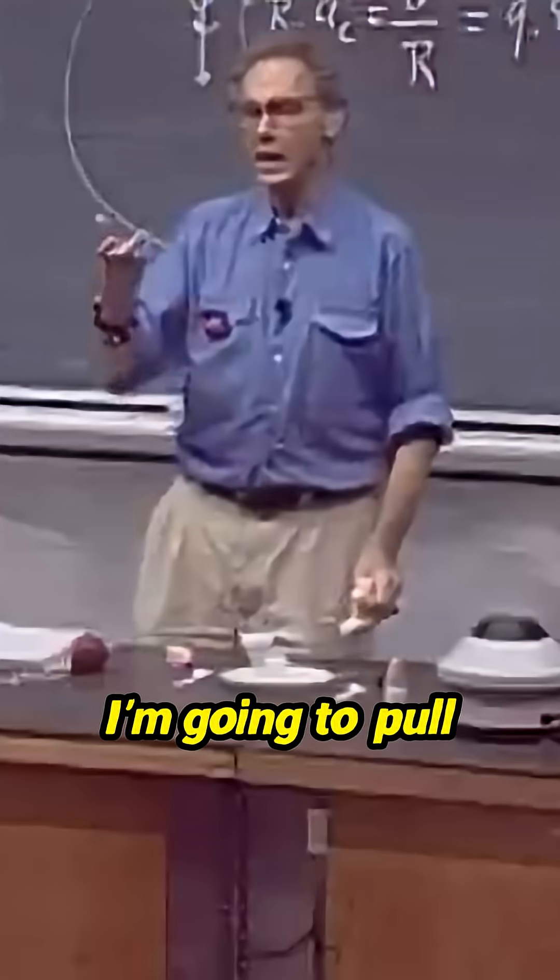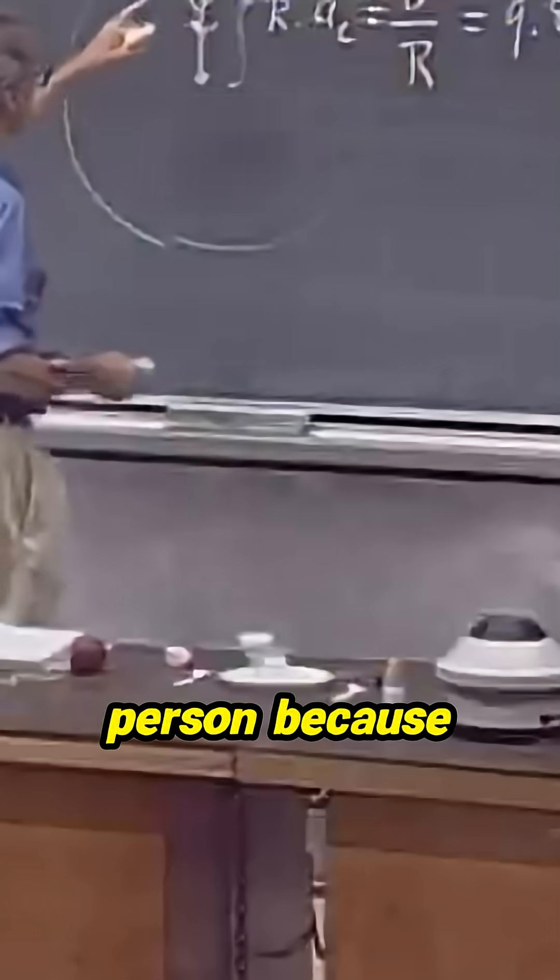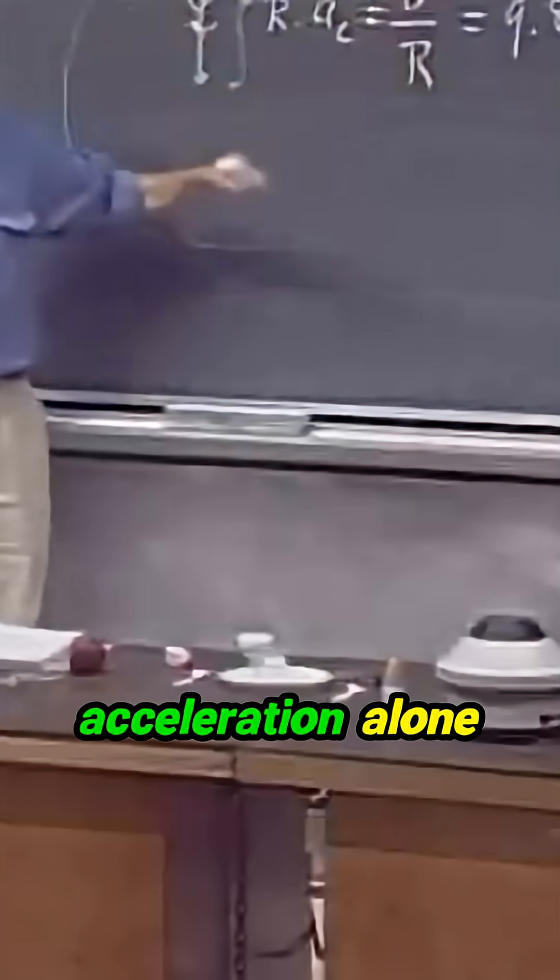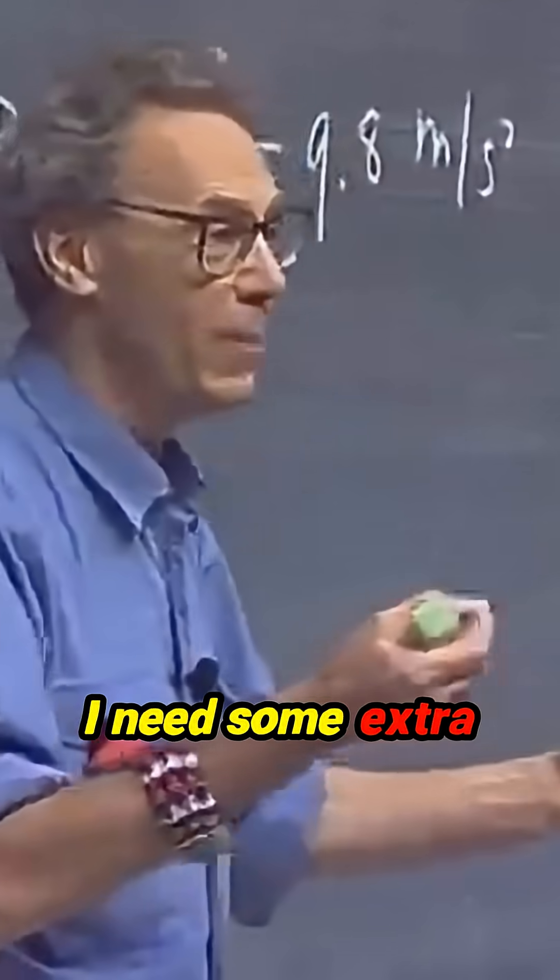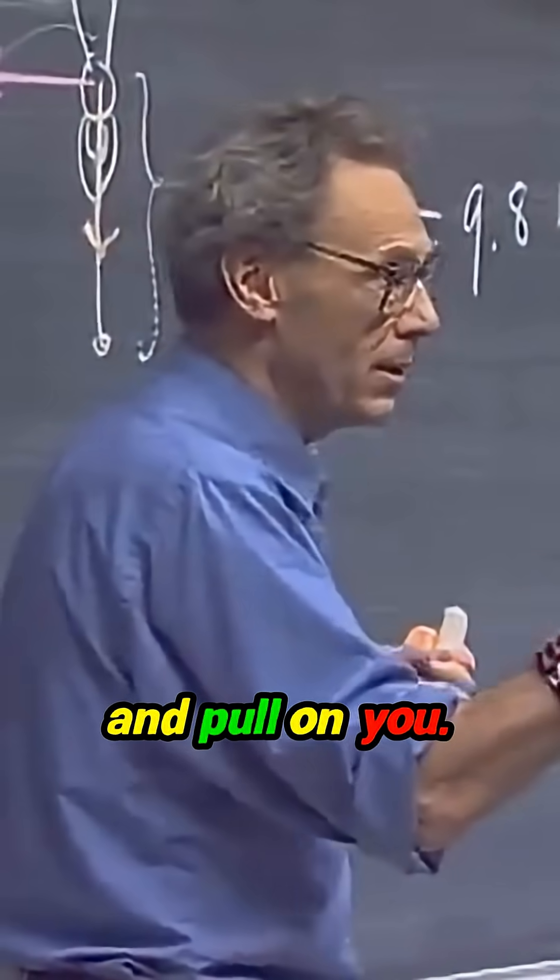The string will say, aha, I'm going to pull now on this person. Because the gravitational acceleration alone is not enough. I need some extra pull. So the string is going to tighten and pull on you.